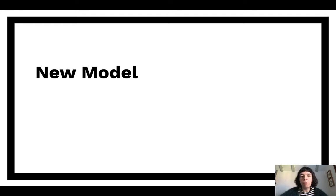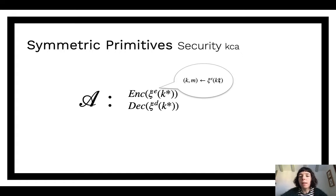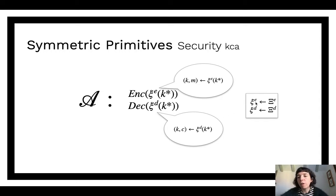We introduced this new model of security, which we call key-correlated attacks, and we show what happens there. How does this look from the adversary's perspective? Similar to the RKA and KDM setting, in that the adversary has access to encryption and decryption oracles, except now the adversary queries these XIs. For encryption, it takes a XIE which takes a key k*. For decryption, it takes a XID which takes a key k*. Under the hood, this XIE takes the key k* and outputs a key-correlated key-message pair. For decryption, XID outputs a key-correlated key-ciphertext pair. These correlation derivation functions are derived from correlation derivation sets, as done in all previous KDM work.